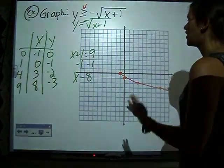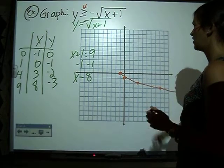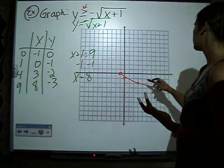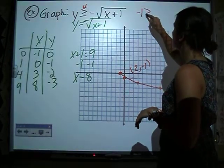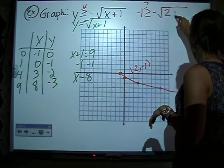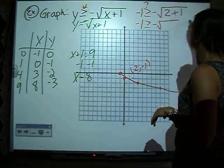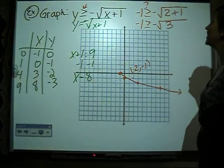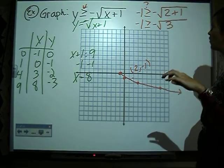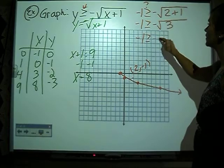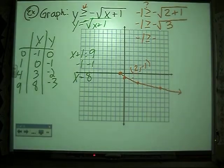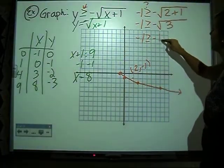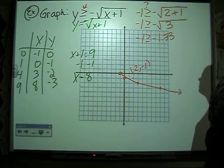And now we need to pick a test point with our domain and range in mind. So we want to stay within this area. If I pick 2, negative 1, that means y is negative 1 greater than or equal to the negative square root. My x is 2 plus 1. So I'm going to have negative 1, square root of 3. Well, the square root of 3 is slightly bigger than 1. The square root of 3 is 1.73-ish. So we're going to have negative 1.73. Is negative 1 greater than negative 1.73? Yes.